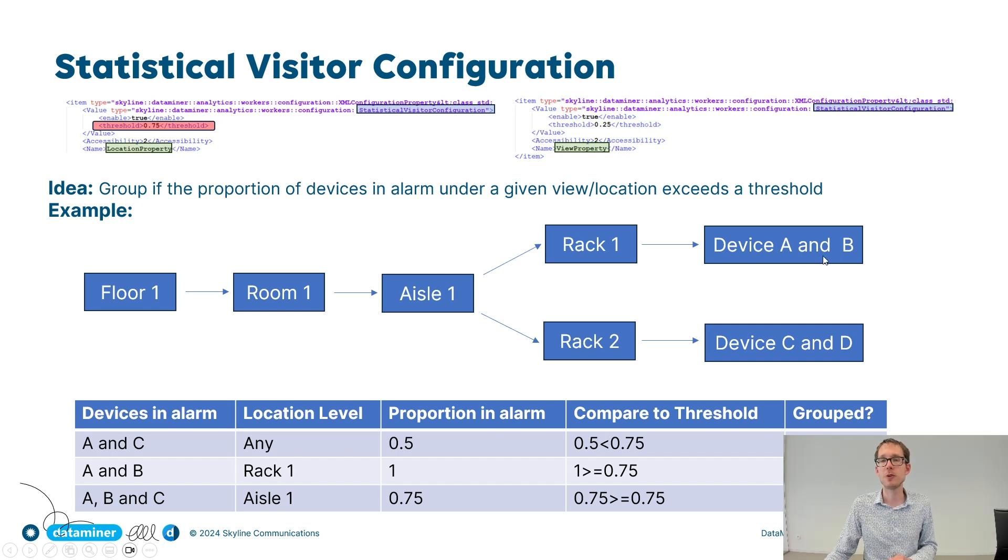Finally, what if we have alarms on A, B and C? Well, in that case, 75% of the devices under aisle one have alarms. And 75% of course is greater or equal to this configured threshold. So again, we will group the alarms. That's the idea behind statistical grouping.